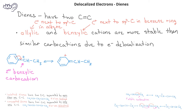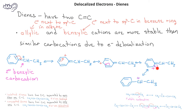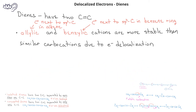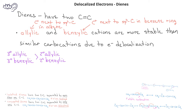Other pi electrons can be donated to move the positive charge to different positions around the ring, resulting in five different resonance-contributing forms. We had previously discussed that tertiary carbocations are more stable than secondary carbocations, which are in turn more stable than primary carbocations. Although there are some exceptions, in general, tertiary benzylic and allylic carbocations will be the most stable. Secondary benzylic and allylic carbocations will be next, followed by tertiary carbocations. Primary benzylic, primary allylic, and secondary carbocations will all be about equally stable, and primary carbocations will be least stable.